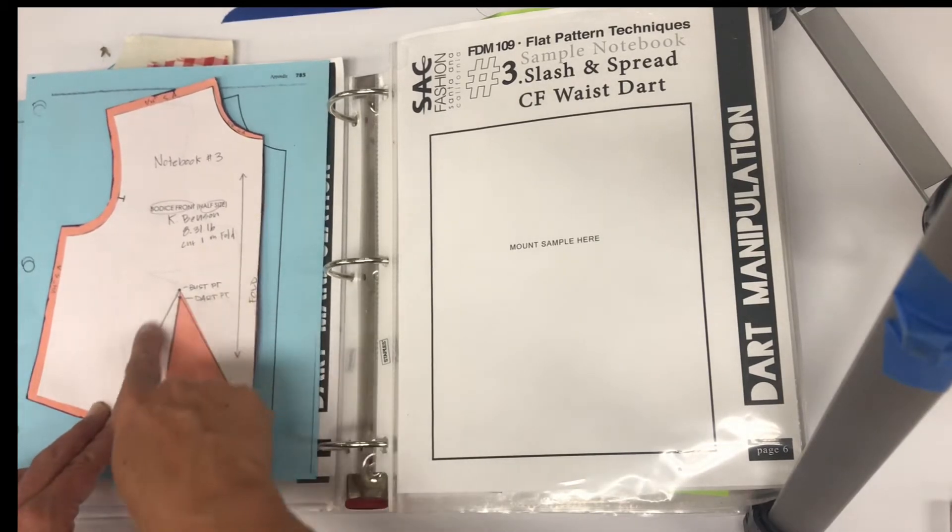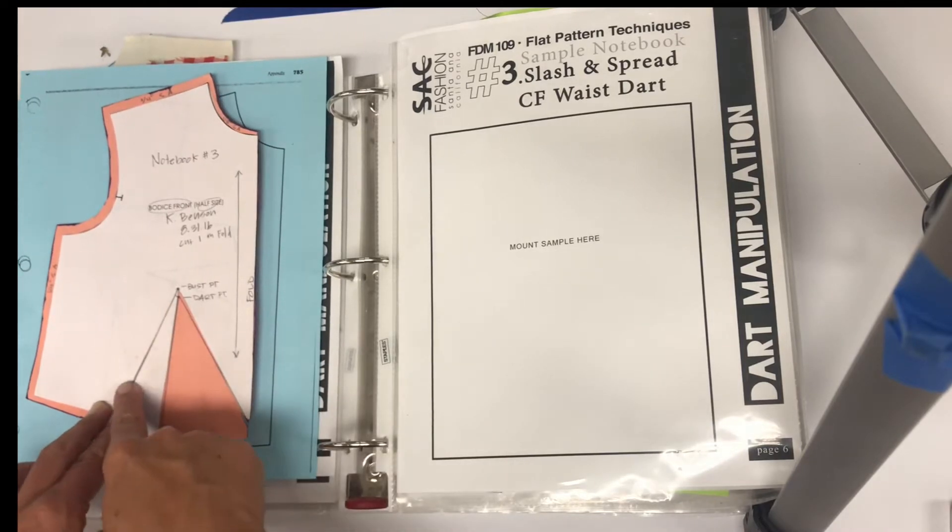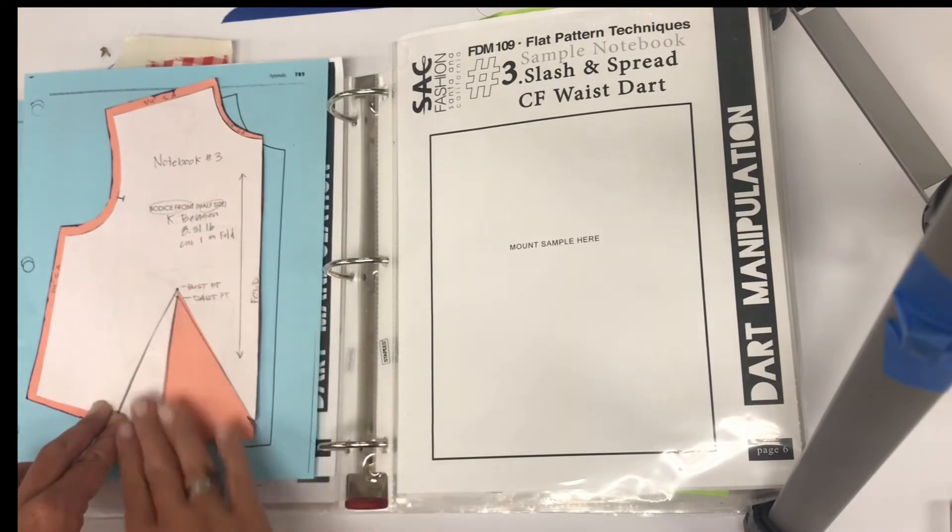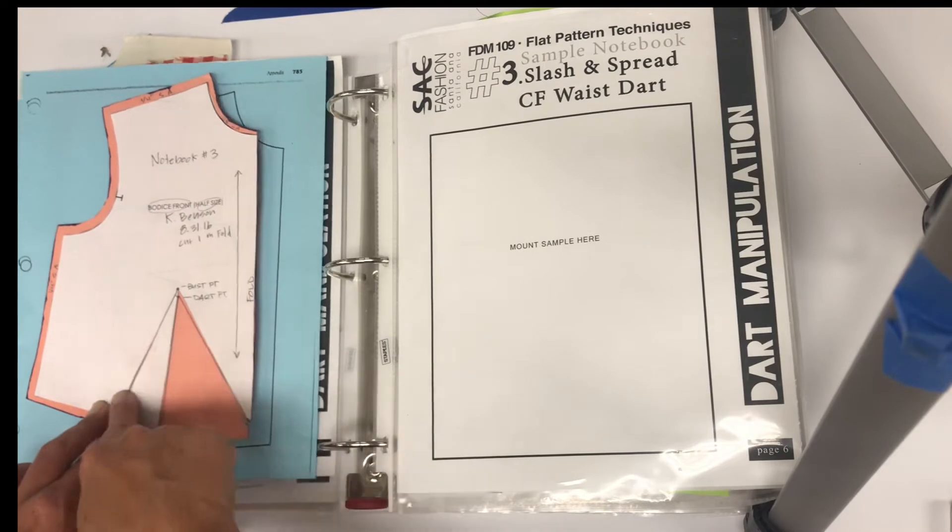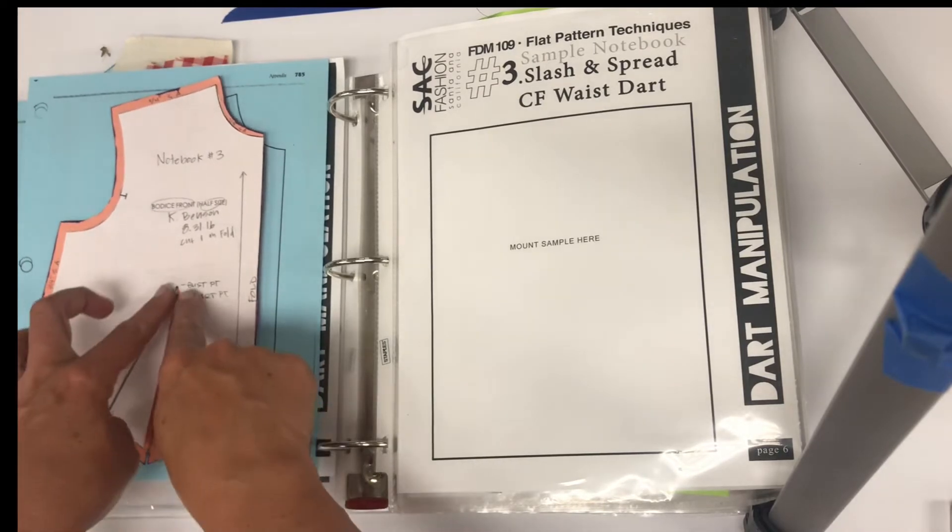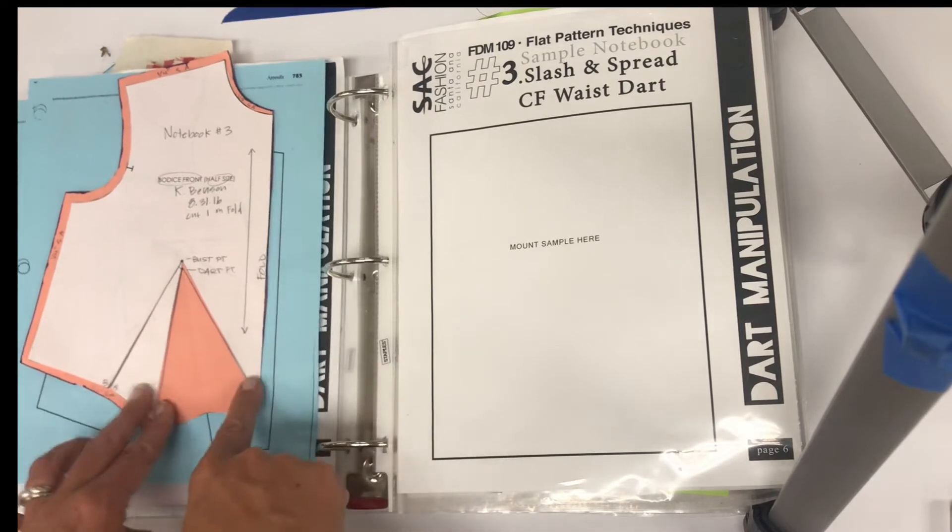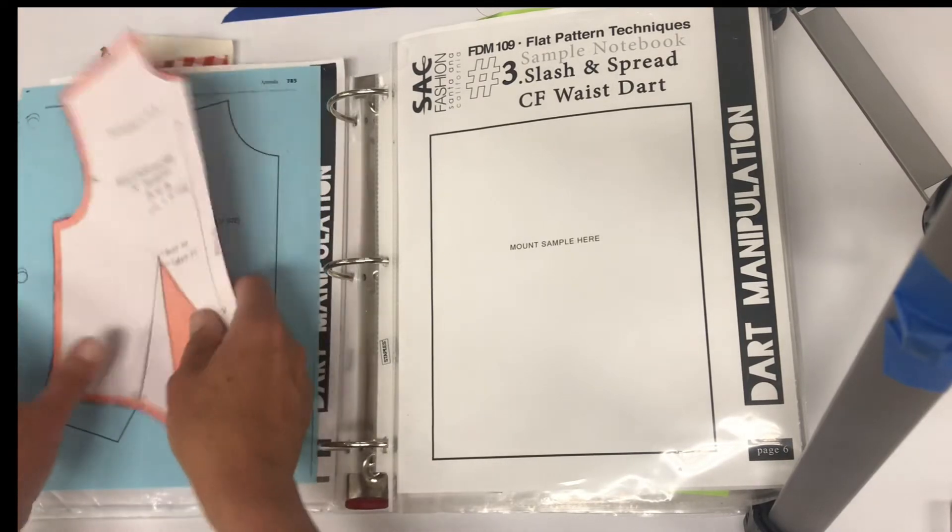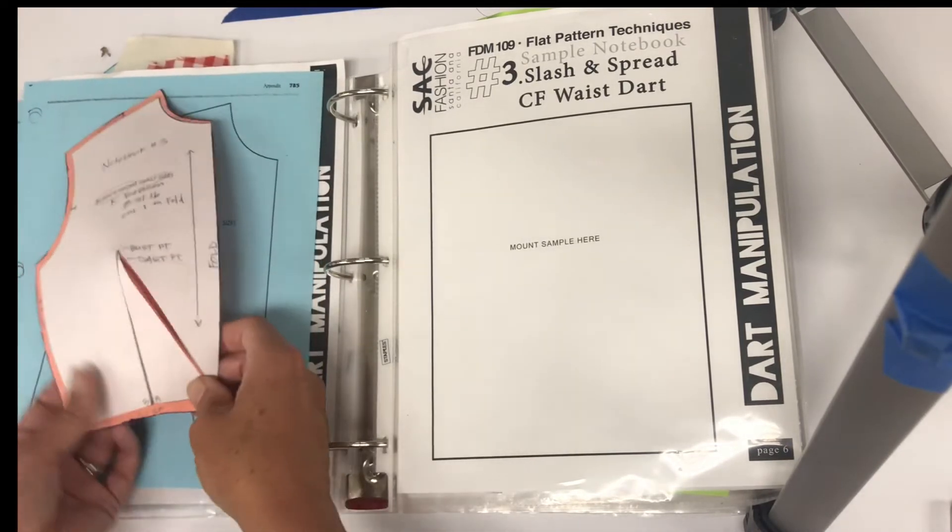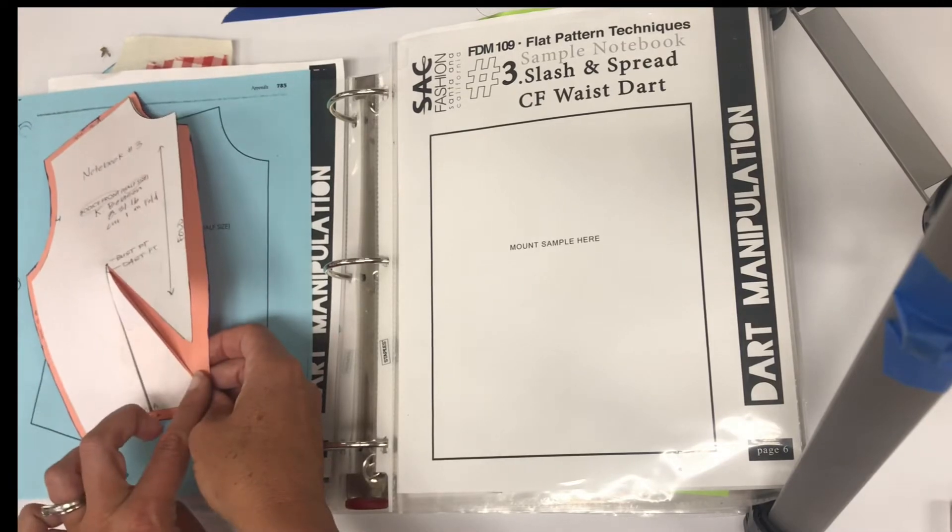This line right here represents where the dart was, but when we cut this out of fabric we won't use that line at all and these would be our sew lines. We would sew these dart legs together so that when we're finished our dart will end up at the center front waist.